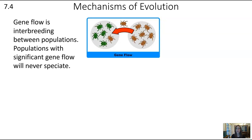The next mechanism of evolution is gene flow. Gene flow is simply interbreeding between populations, and you can get a change to a population if new genes come into it. For example, the population on the left shows that all of the beetles are green. If members of a different population come in, that can change the gene pool. It's important to link this back to speciation and recognize that populations with significant gene flow will never speciate because those genes keep mixing up.